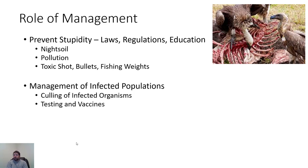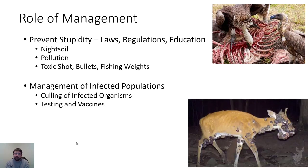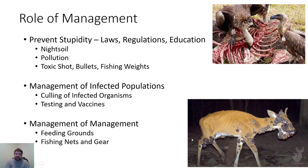Other management situations involve testing and vaccinating individuals. Brucellosis is one example — there's a lot of testing and management for brucellosis. In cases where organisms have visible diseases, like these swollen bulges on a deer, culling the individual comes into play. Clearly that individual is not going to get better. And finally, the management of management itself — the role of fish and wildlife managers includes preventing stupidity and managing infected populations, but they also need to manage their own practices.